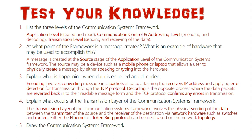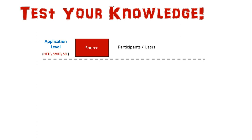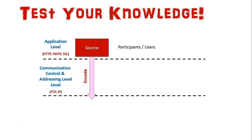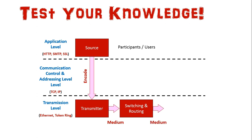Question five: draw the communication systems framework. At the application level, participants and users access the system. Starting at the source, the source encodes the message into data packets. These are then sent at the transmission level via the transmitter, which goes through a medium and hardware — switches and routers — depending on the type of network being used.